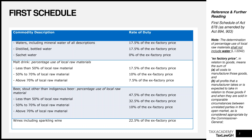Distilled bottled water — your Voltic, Belaqua, and specialized bottled waters — also attracts excise duty of 17.5%. Sachet water, on the other hand, attracts zero percent excise duty. So remember: if the water is bottled it attracts 17.5%, but if it's sachet water it attracts zero percent.